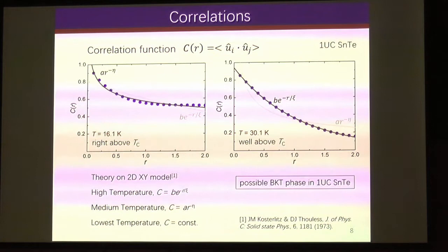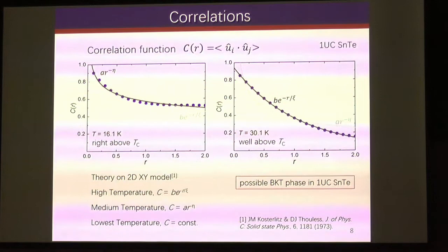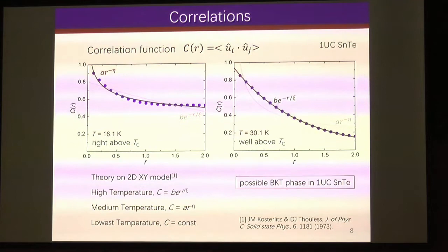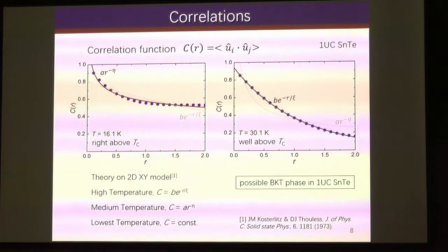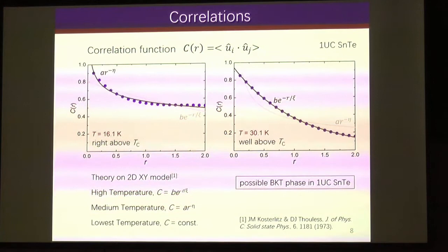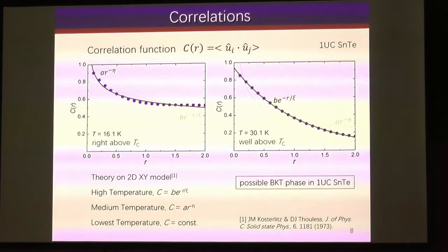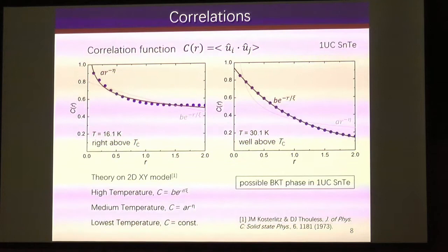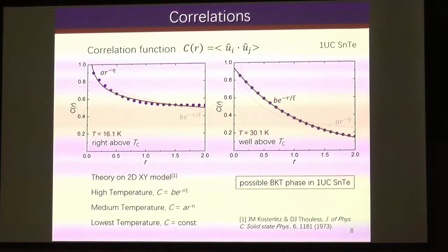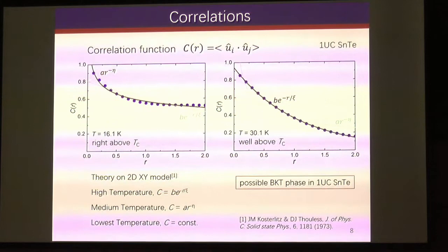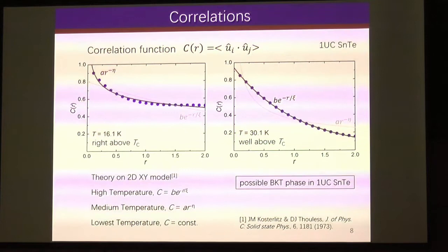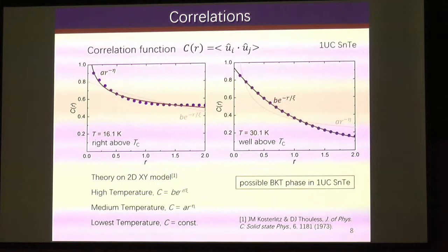To predict the BKT phase, we first look at the correlations. The correlation function is defined as the dot product of two local modes at a certain distance R. According to the theory of the 2D XY model, at very high temperature the correlation follows exponential fitting, and indeed at temperatures well above TC it follows exponential very well. At the lowest temperature it should be constant. At medium temperatures according to the theory it should follow a power law. We chose a temperature right above TC and performed the fitting — it fits the power law much better, indicating a possible BKT phase right above TC in the 1-unit-cell thick tin telluride.